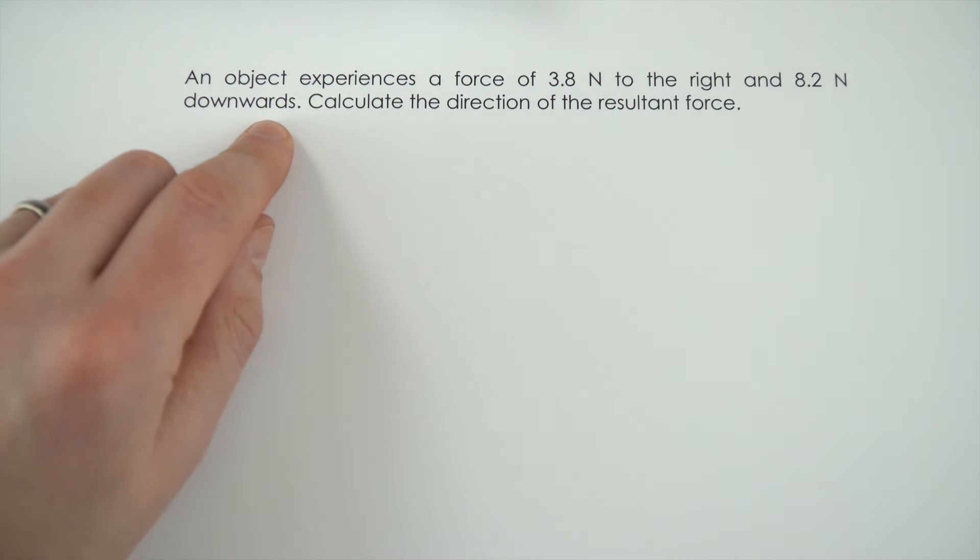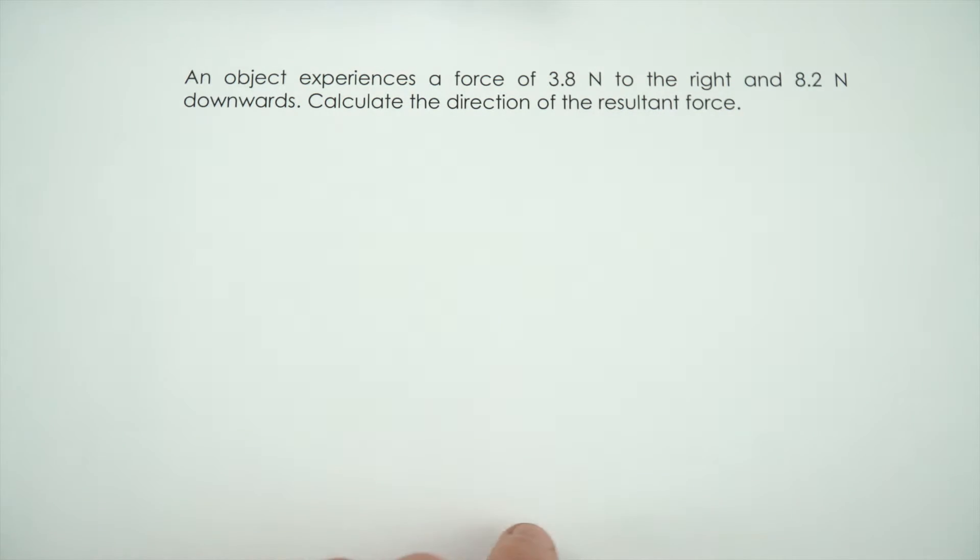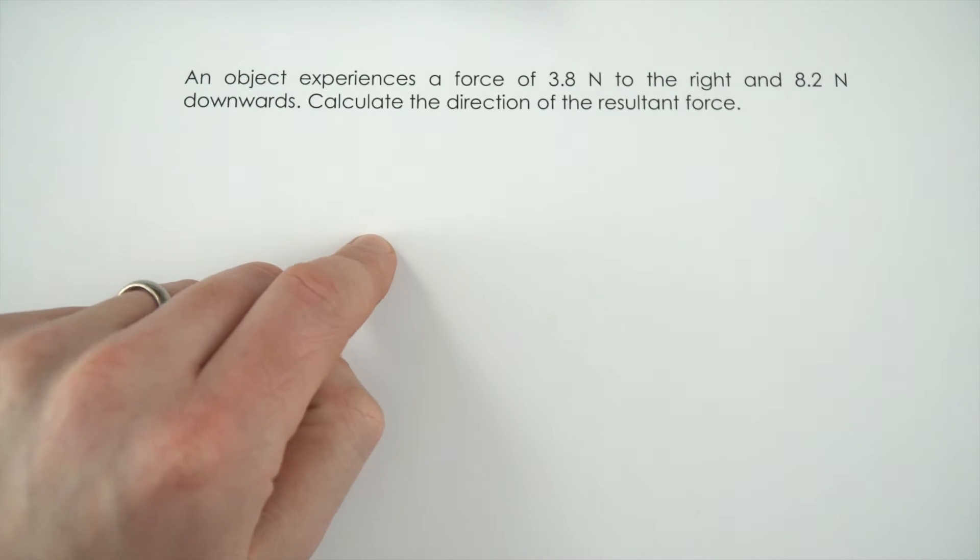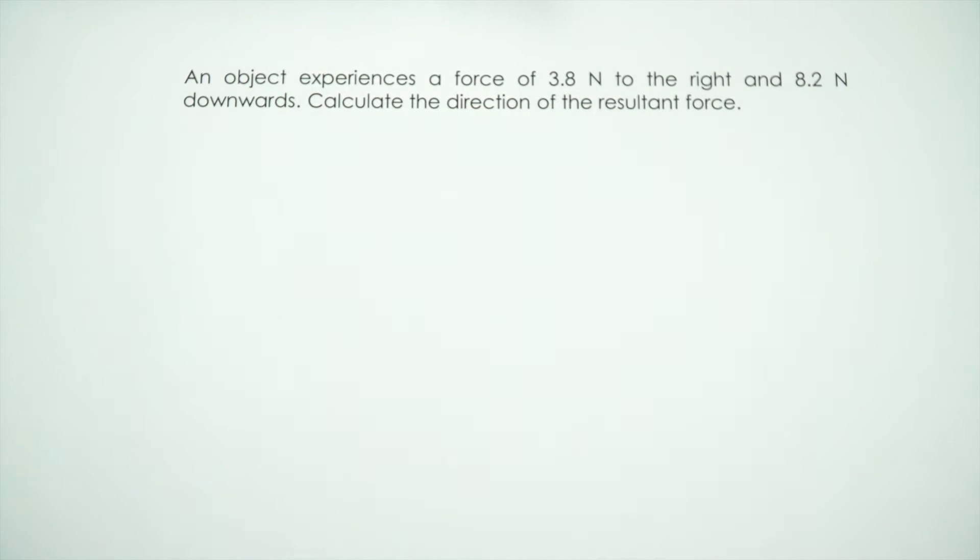In this example, an object experiences a force of 3.8 newtons to the right and 8.2 newtons down, and we want to know the direction of that resultant force. This is really important when it comes to looking at vector quantities.